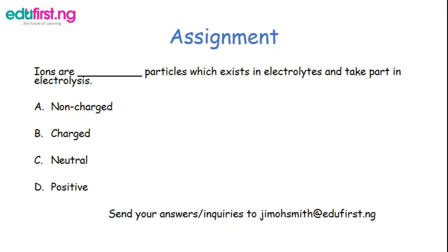Ions are [blank] particles which exist in electrolytes and take part in electrolysis. Option A: non-charge. Option B: charged. Option C: neutral. Option D: positive. Send your answers and inquiries to Jima Smith at edufest.ng. Thank you.